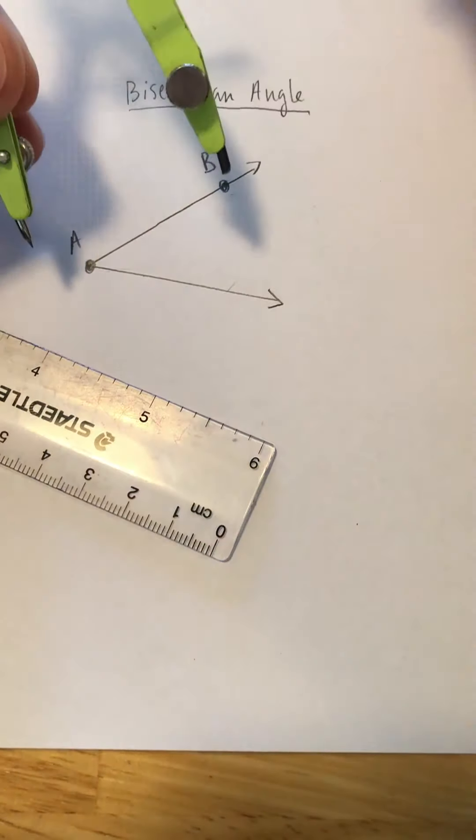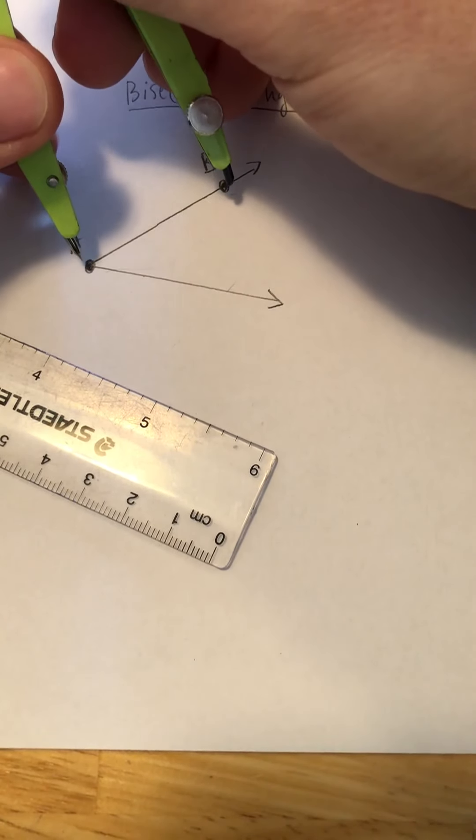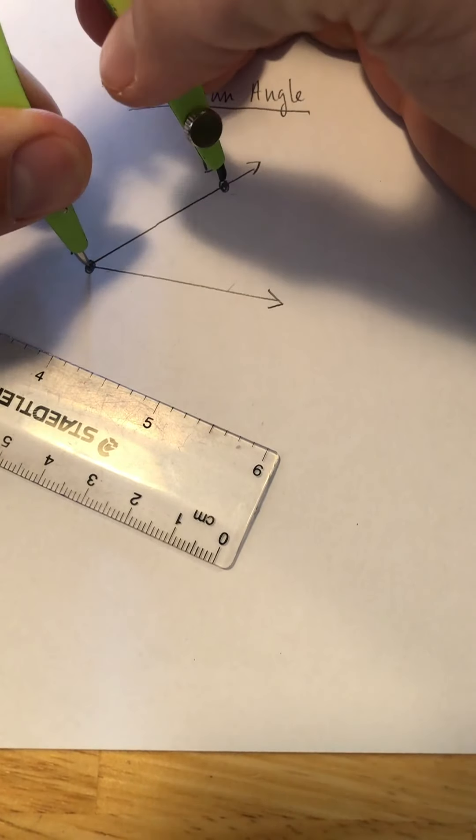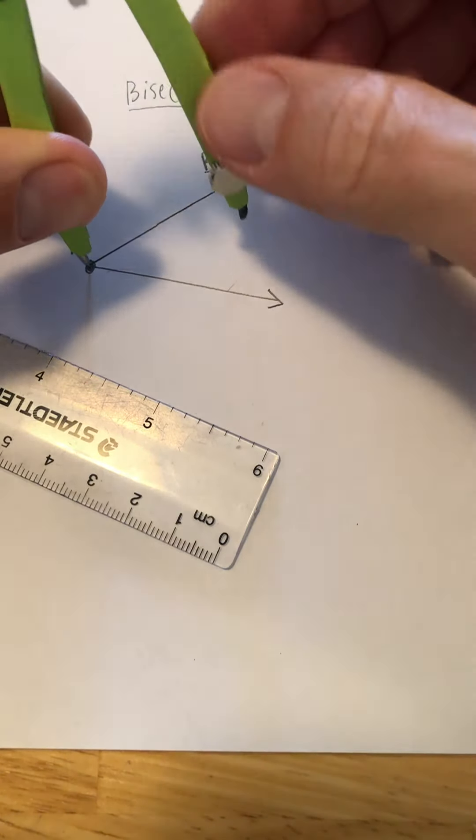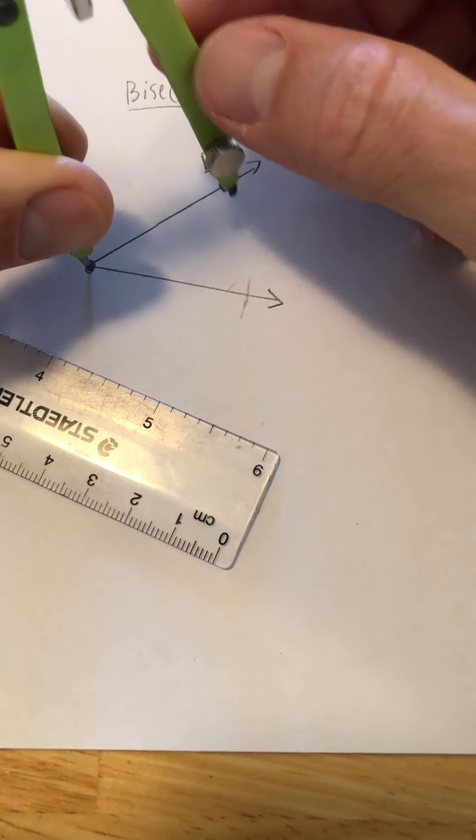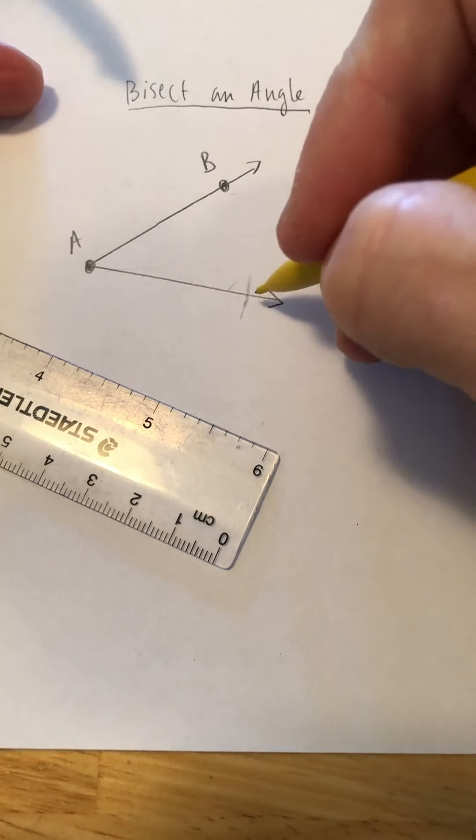So I'm going to open up my compass to AB because I need AC to be the same measure, same distance. Okay. So my compass helps preserve distances. So I make a mark here that's the same distance as AB, and that point we're going to call C.